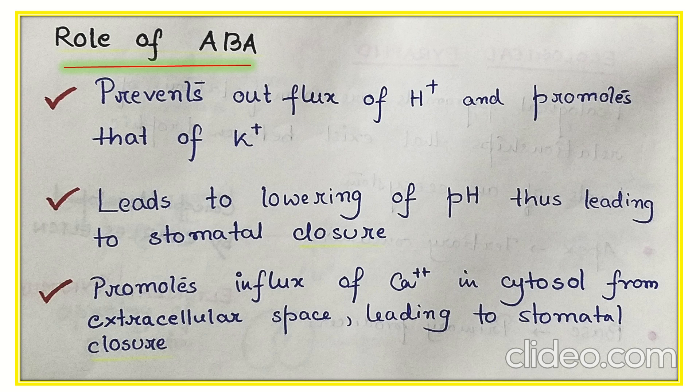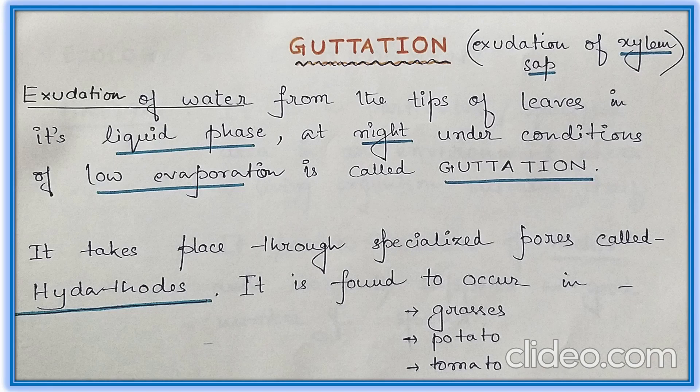Before we wind up, let's know a small definition. Guttation is a very simple phenomenon that we get to see in nature. It is the exudation of water from the tip of leaves in its liquid phase, at night, under conditions of low evaporation. It takes place through specialized pores called hydathodes.